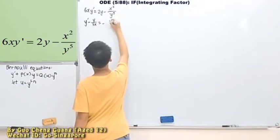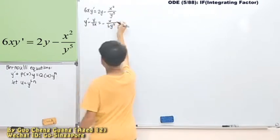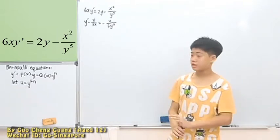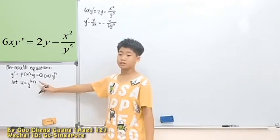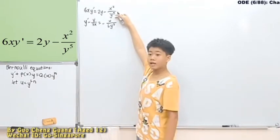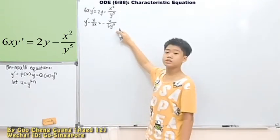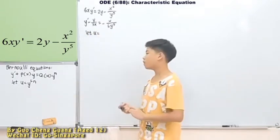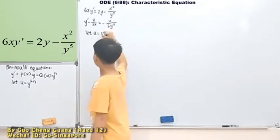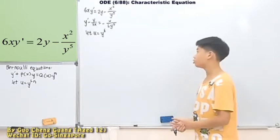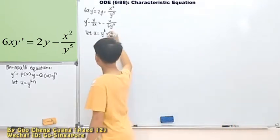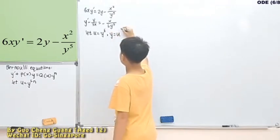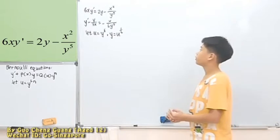We want y to the power of 1 minus n. Okay, this part is y to the power of negative 5. Until here, this is still y to the power of negative 5. So, 1 minus a negative 5. That means this is u as equal to y to the power of 6. Okay, so this is your u. The other one is y. It will be u to the power of 1 over 6.